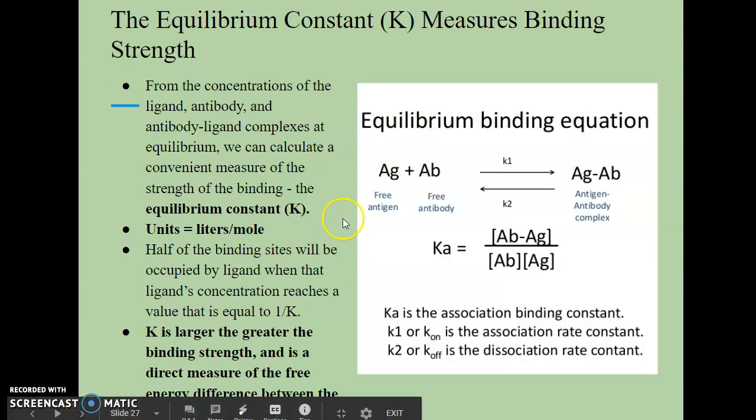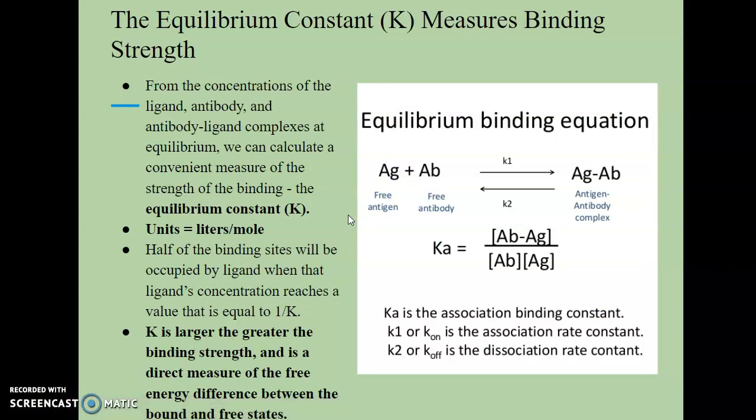So that's our scenario, right? So here we have the equilibrium constant again. So back to our scenario. From the concentrations of the ligand, the antibody, and the antibody-ligand complexes at equilibrium, we can calculate a convenient measure of the strength of the binding, and that's what we call the equilibrium constant K. Those units are usually in liters per mole. So over here, we have the equilibrium binding equation. And so Ag is going to stand for the antigen, or in our situation, the ligand. And then Ab stands for the antibody. So ligand plus protein.